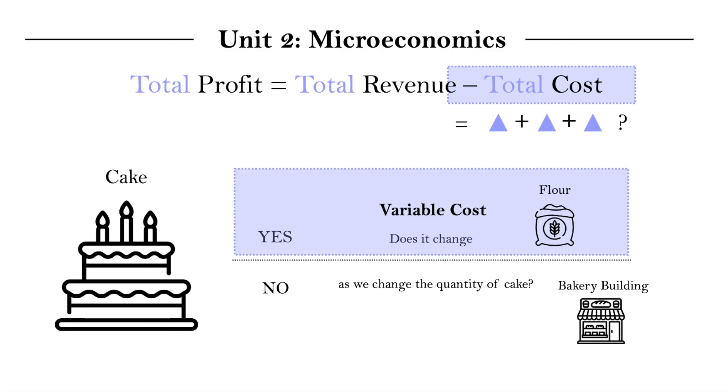So these costs that vary, so variable costs change when we change the quantity of output. And the costs that do not vary when we change the quantity of cakes, those that stay fixed, are called fixed costs. Like the example of rent, where the cost is the same and independent of the quantity of cake.